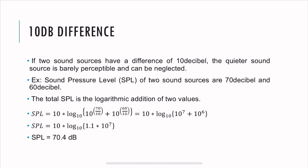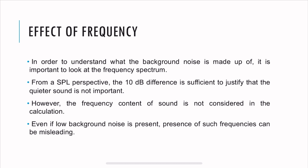The only difference from adding 60 and 70 logarithmically is just a 0.4 increase, which is not perceptible at all. This leads to the conclusion that if you have two sound sources which are 10 dB apart or more, we can neglect the quieter sound source. From an SPL perspective, the 10 dB difference is sufficient to justify that the quieter sound is not important.